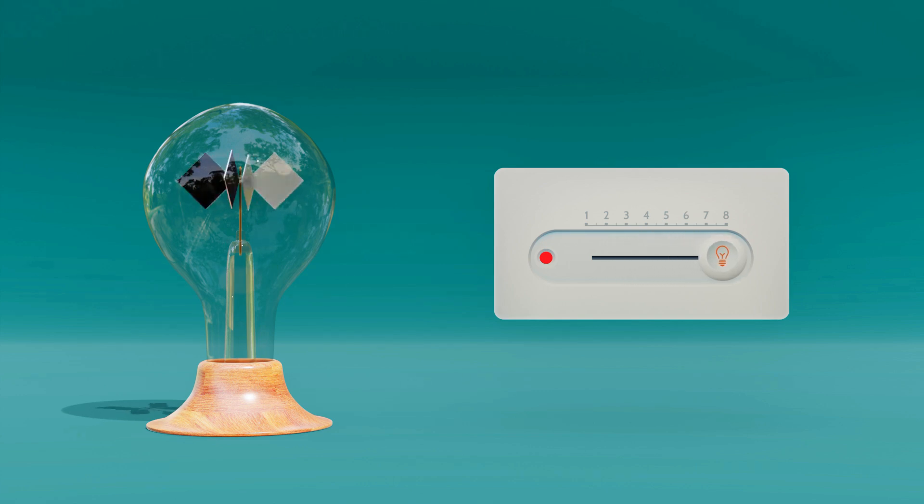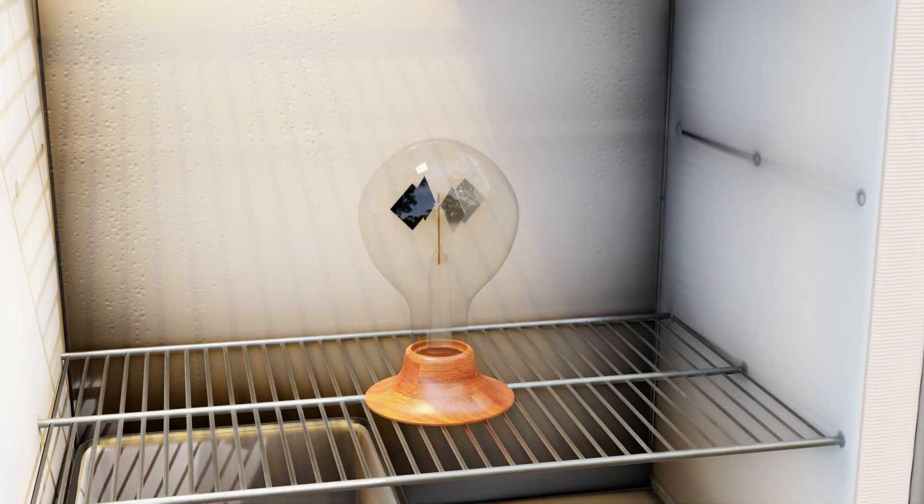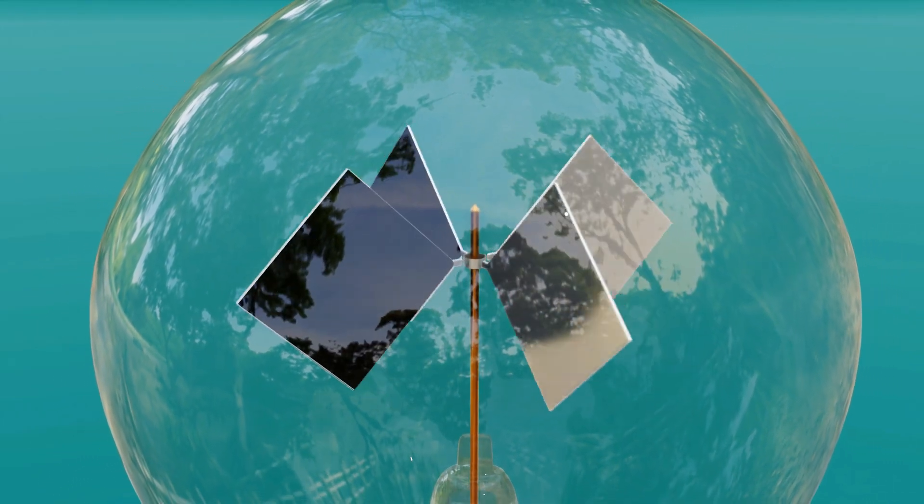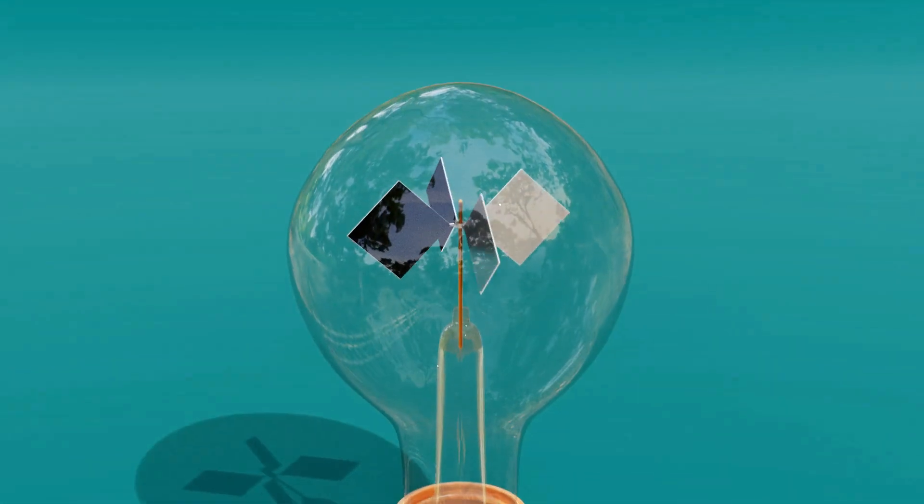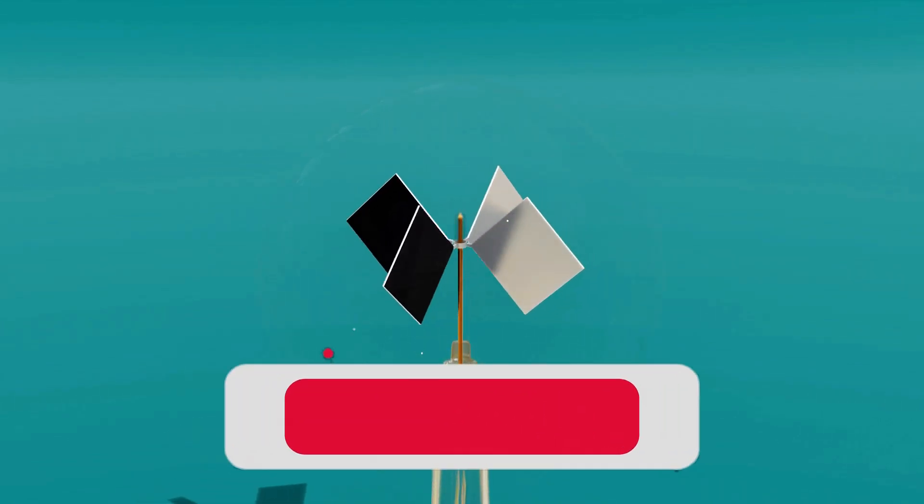So now, after everything we've explored, can you guess why the radiometer spins in the opposite direction when placed in the freezer? Share your guesses in the comments below. In the end, the radiometer teaches us one thing—science is never about the easy answers. It's about the endless questions that keep the wheels turning.